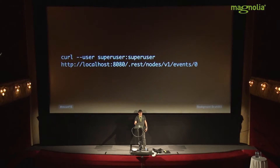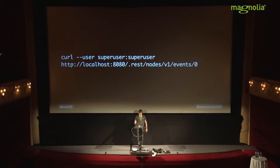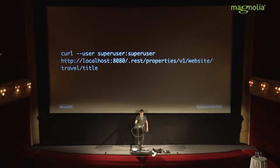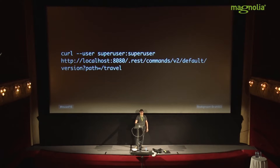A few examples. You can very easily test REST services via the command line interface. Here we are just querying the first event from a custom event endpoint. Or we can create a property — for example, returning the title for the travel website demo. Or here I'm actually creating a new version of a page, so I can emulate from outside the actions which are normally done in Magnolia. All actions based on the command action can be executed through REST as well — that's why we have the commands endpoint.